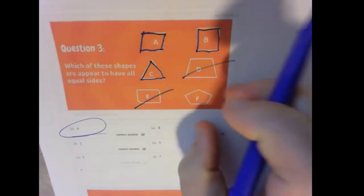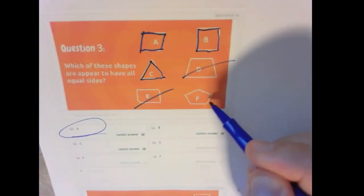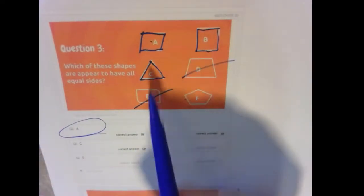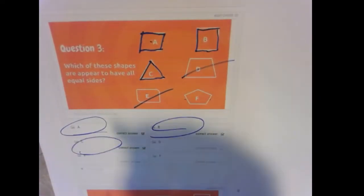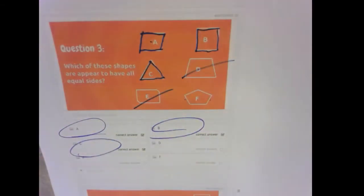So clearly E is different. F, it looks close, but it's a little bit squished. And these sides look to be a little bit shorter than the others. So I would say A, B, and C are the shapes that appear to have all equal sides.